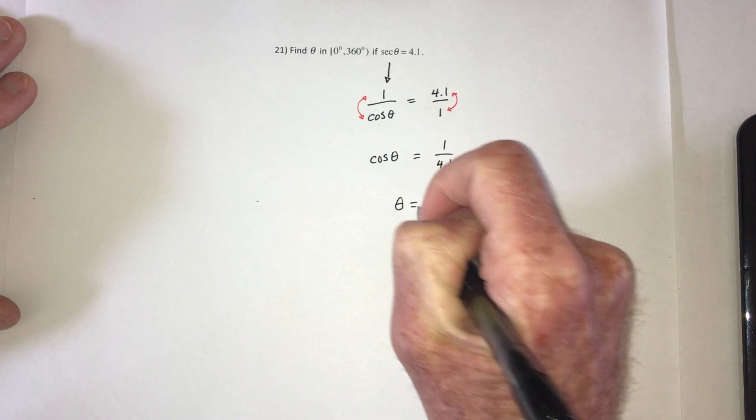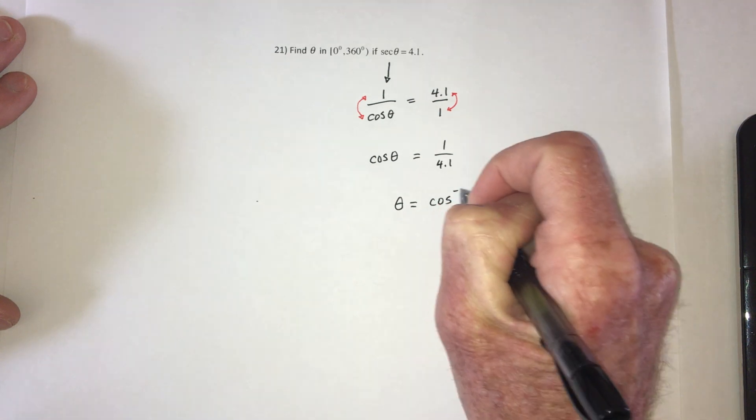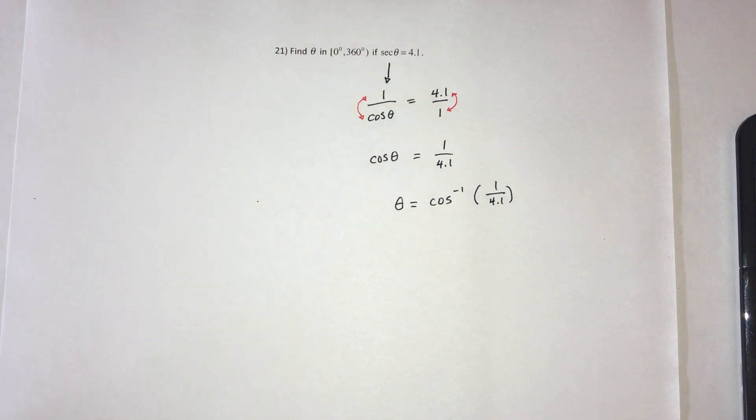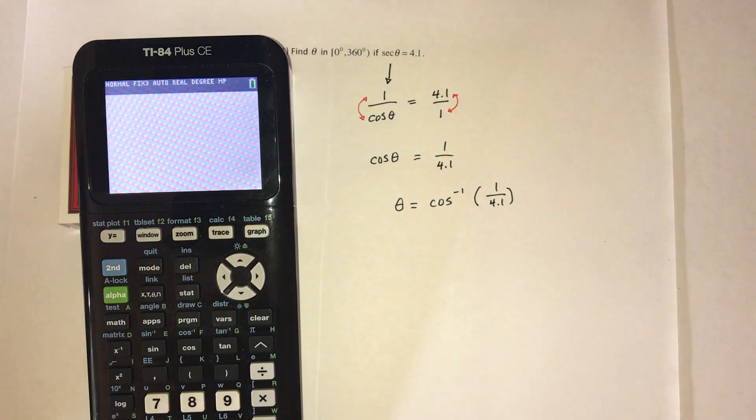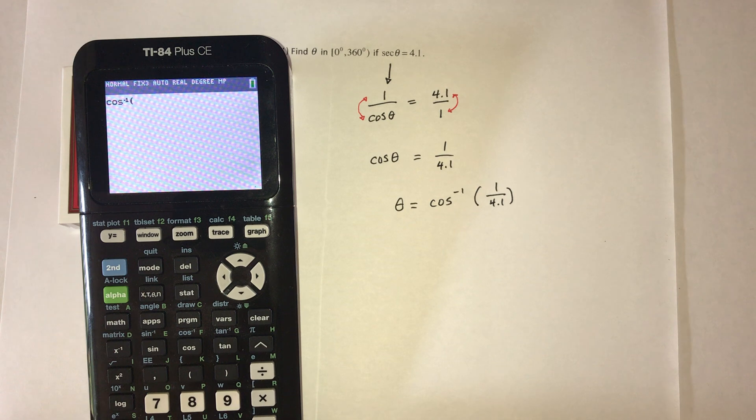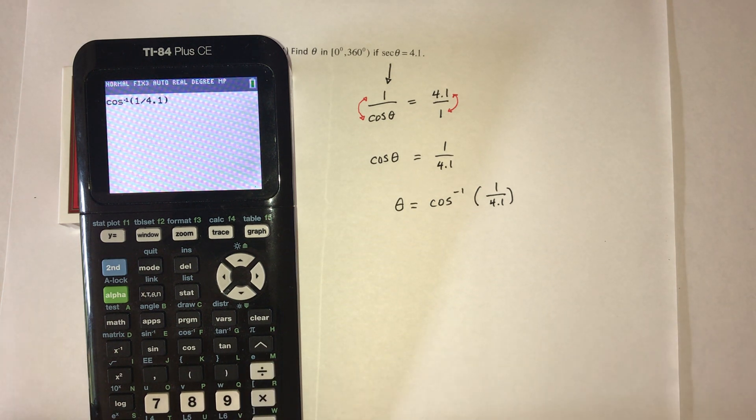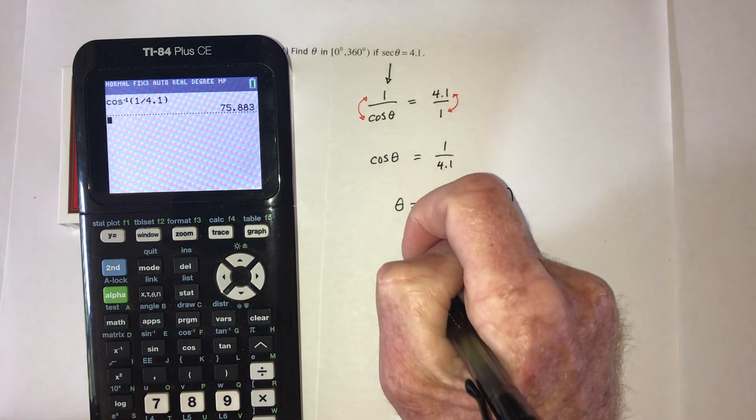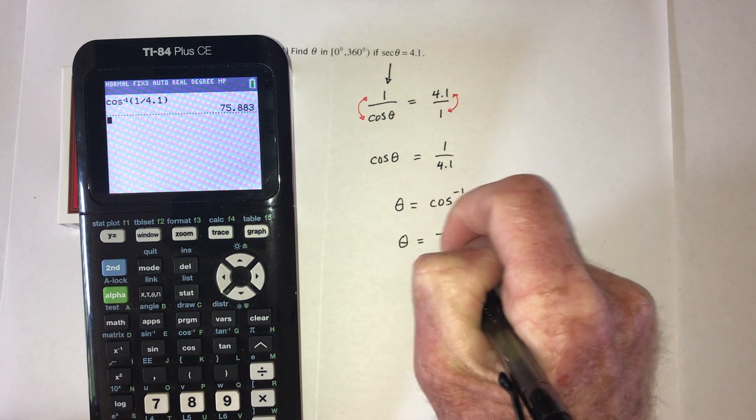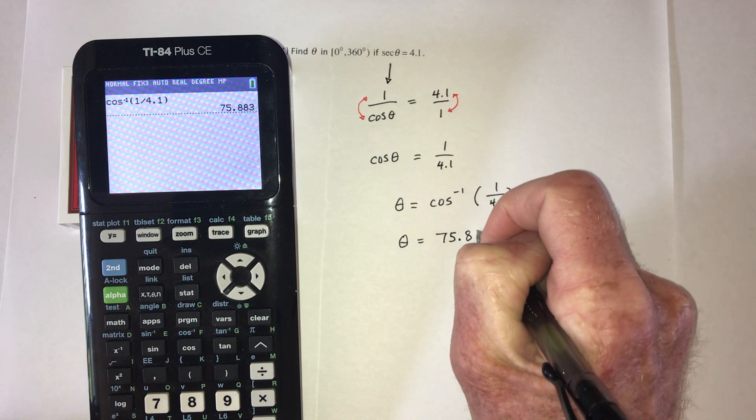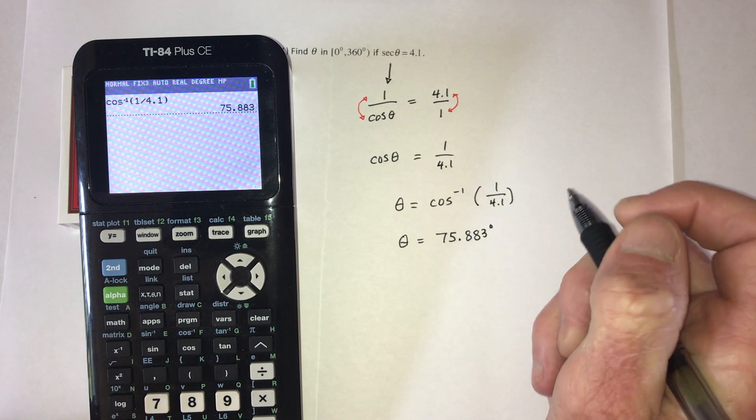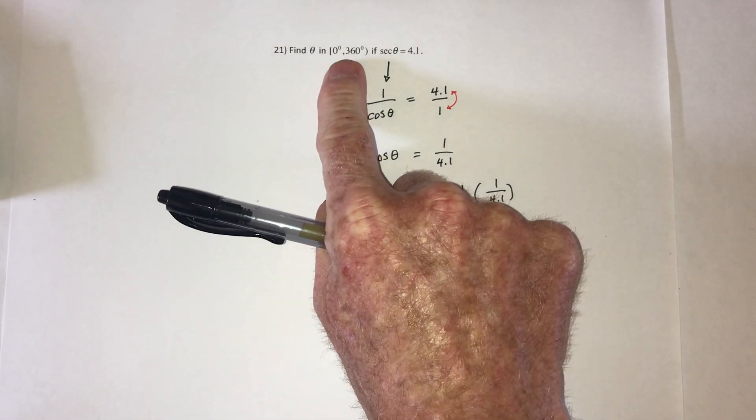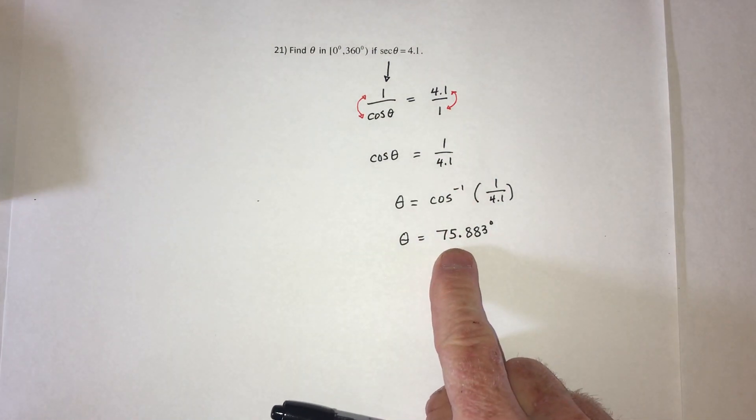Next up, you guessed it, use cosine inverse. So how much is cosine inverse of 1 divided by 4.1? Make sure the calculator's in degrees. So the answer is 75.883 degrees. And that is between 0 and 360, so that looks like it's a keeper.